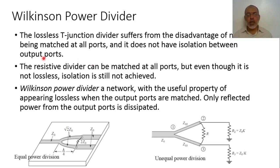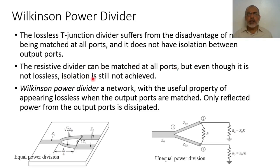On the other hand, for the lossy T-junction or resistive T-junction divider, it can be matched at all ports. But even so, it is not lossless, and also the isolation is still not achieved between the ports.